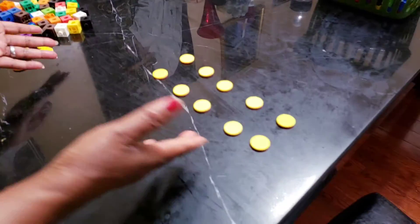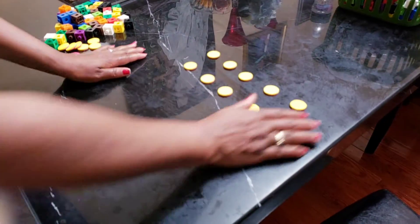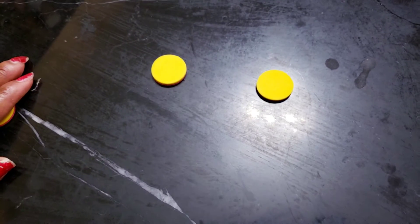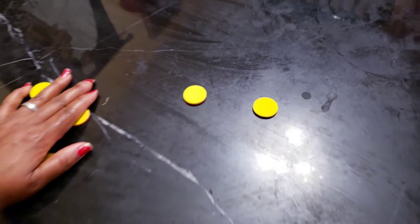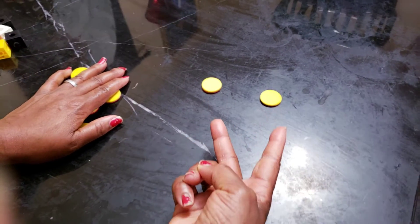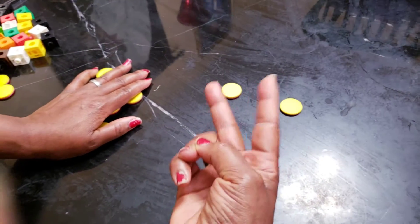So you can do some activities with this as well. You can ask your child, how many is this? And your child will count 1, 2. You can use your fingers and say 2. Have your child repeat 2.